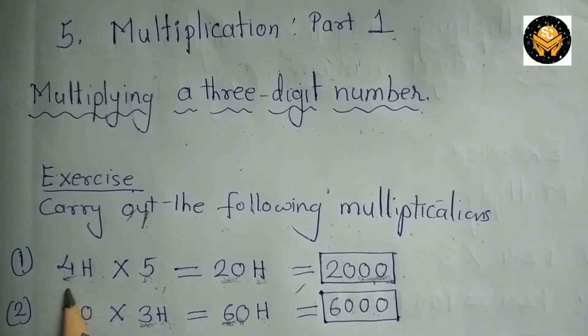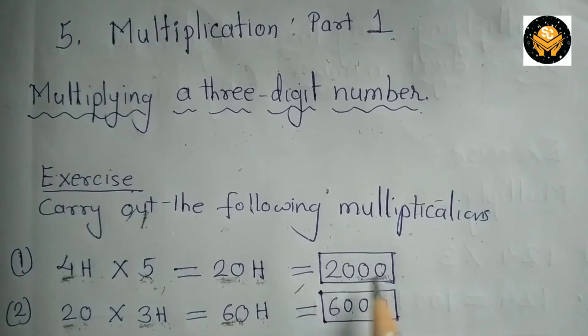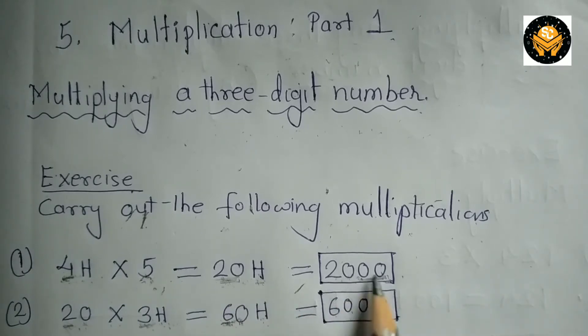Now the first sum is 4H multiply by 5. To find the product of these two numbers, you are going to multiply 4 with 5 first. 4 5s are 20. So write 20 here and then write this H here. So you got the product 20H. And 20H means 20, 100. That is equal to 2000.